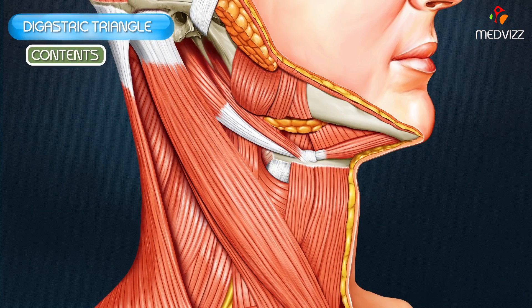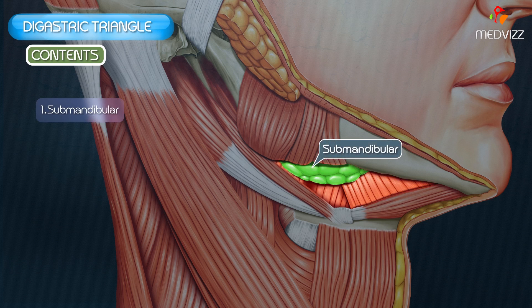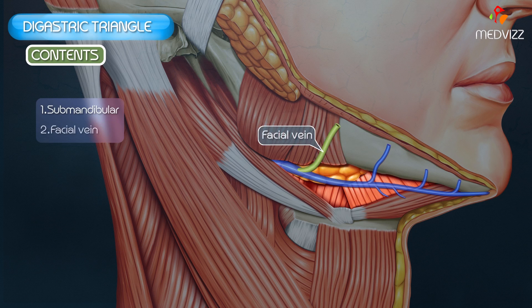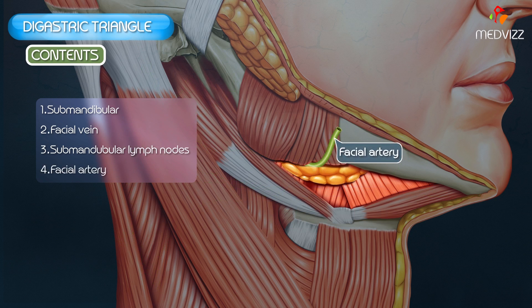The contents of the triangle: in the anterior part, the structures which are superficial to the mylohyoid are the superficial part of the submandibular salivary gland and the facial vein, as well as the submandibular lymph nodes which are superficial to it, and the facial artery which is deep to it.